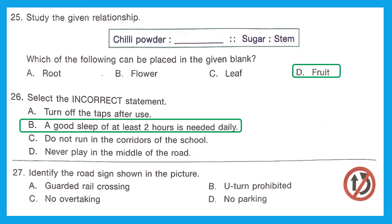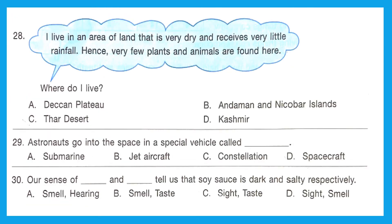Question 27: Identify the road sign shown in the picture. You must have seen this sign on roads — it is the 'no overtaking' sign. Option C is the right answer. Question 28: An area of land that is very dry and receives very little rainfall, so very few plants and animals are found there — this describes a desert. The right answer is option C, the Thar Desert.